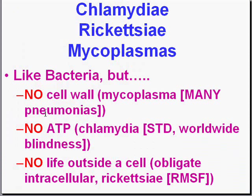Now let's talk about a general category of bacteria-like organisms. They're not exactly bacteria because they don't have cell walls, they don't make ATP like bacteria do, and you can't culture them — they have no life outside a cell. For this reason, chlamydial infections, rickettsial infections, and mycoplasmal infections are called obligate intracellular organisms, because they are obliged to live in human cells to survive. They have no cell walls, no mitochondria, and therefore can't make ATP and can't be cultured.